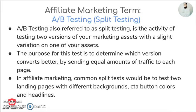A-B testing, also referred to as split testing, is the activity of testing two versions of your marketing assets with a slight variation of one of your assets. The purpose for this test is to determine which version converts better by sending equal amounts of traffic to each page or asset. In affiliate marketing, a common split test would be to test two landing pages with different backgrounds, CTA buttons, and even headlines.